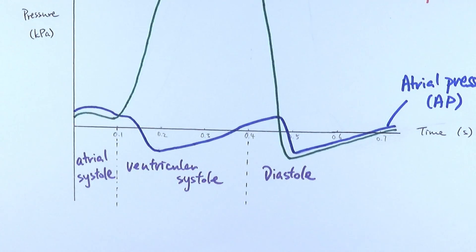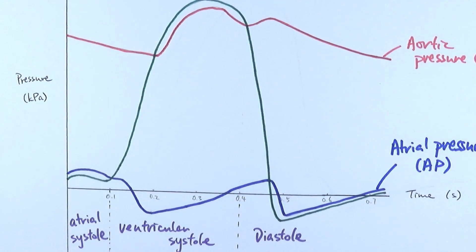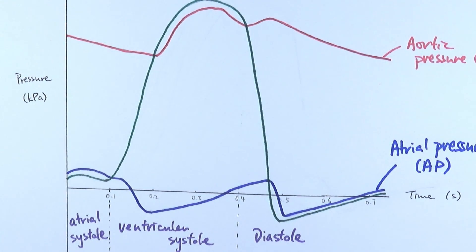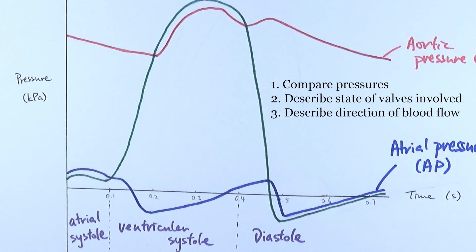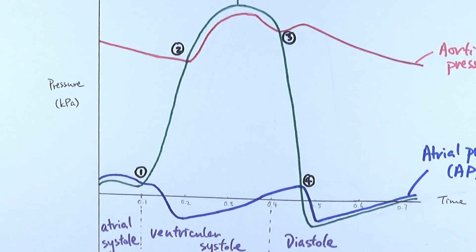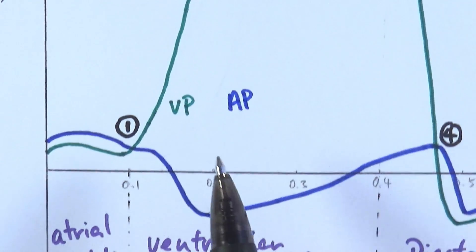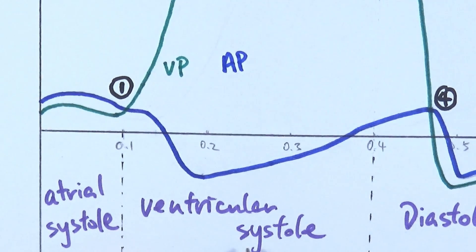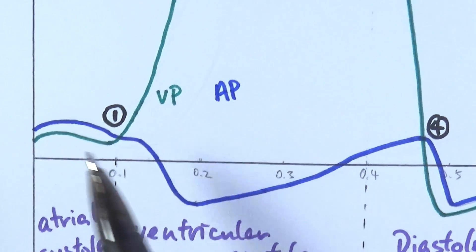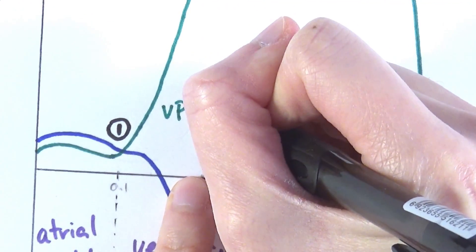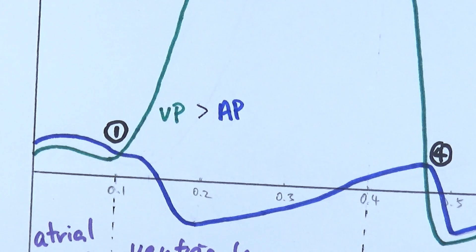With that in mind, we can look at the four different intersection points, which explains the whole thing even better. I'd recommend a specific format: first, identify which pressure is higher than which; second, what is happening with the valves; and third, how is the blood flowing. At the first intersection point, we're looking at ventricular pressure versus atrial pressure. The ventricular pressure is shooting up as we enter ventricular systole, so the ventricular pressure is much higher than the atrial pressure.